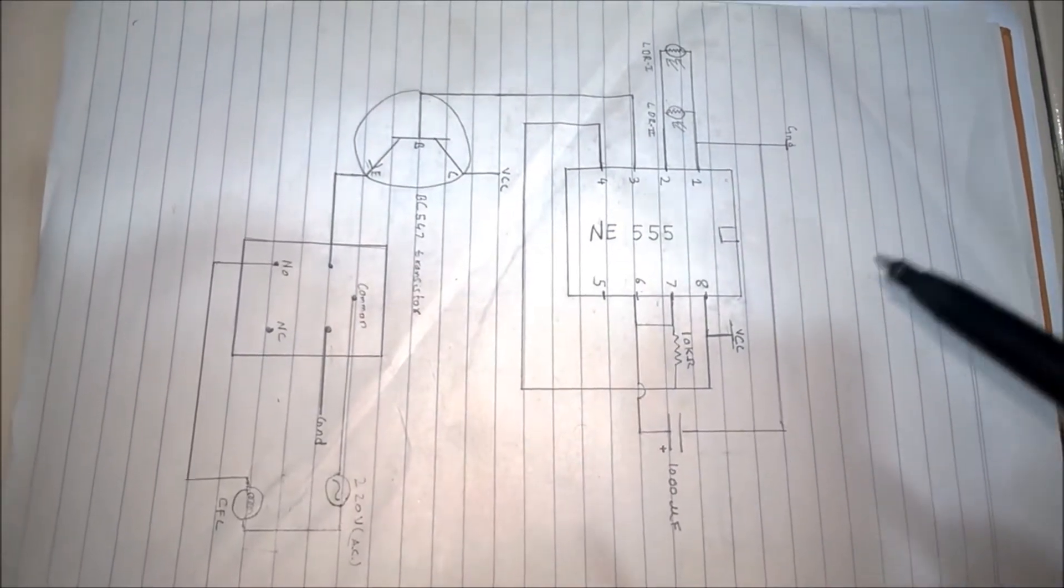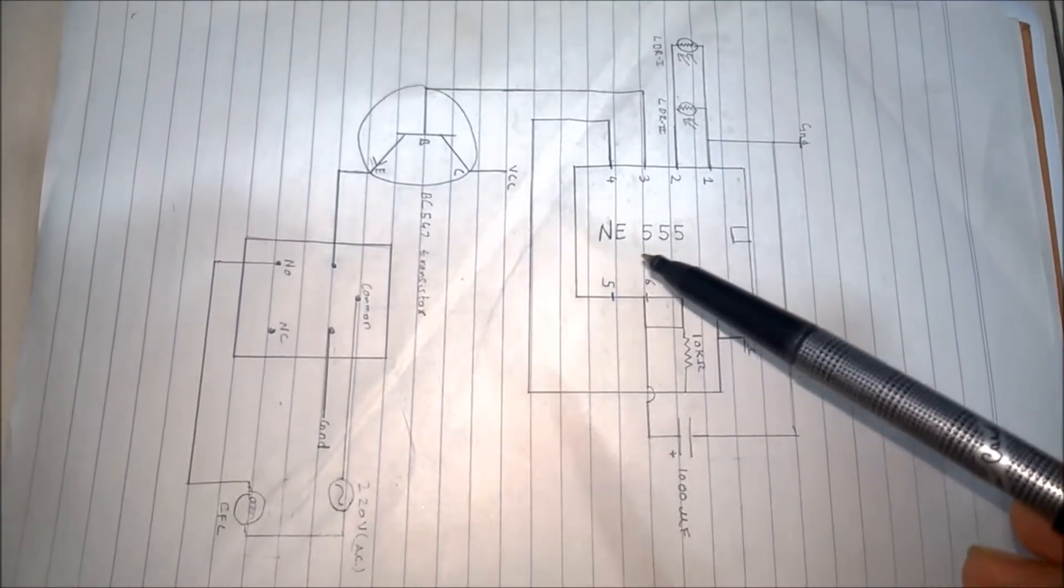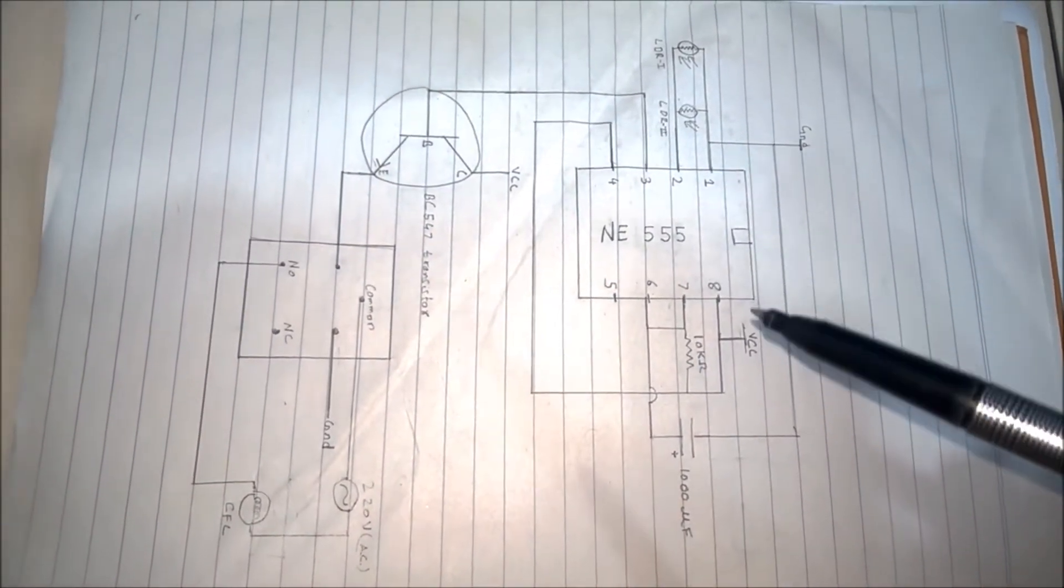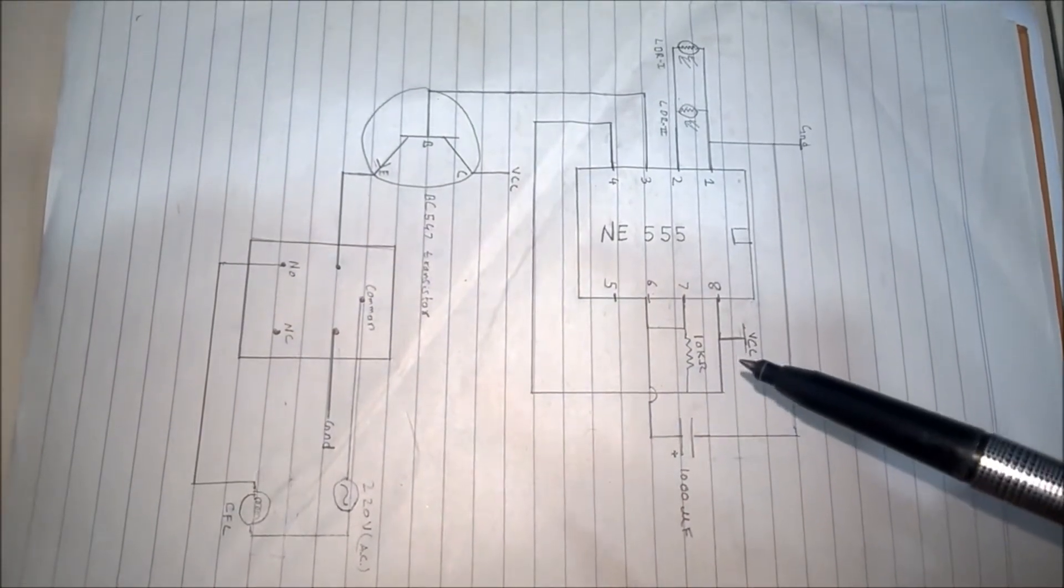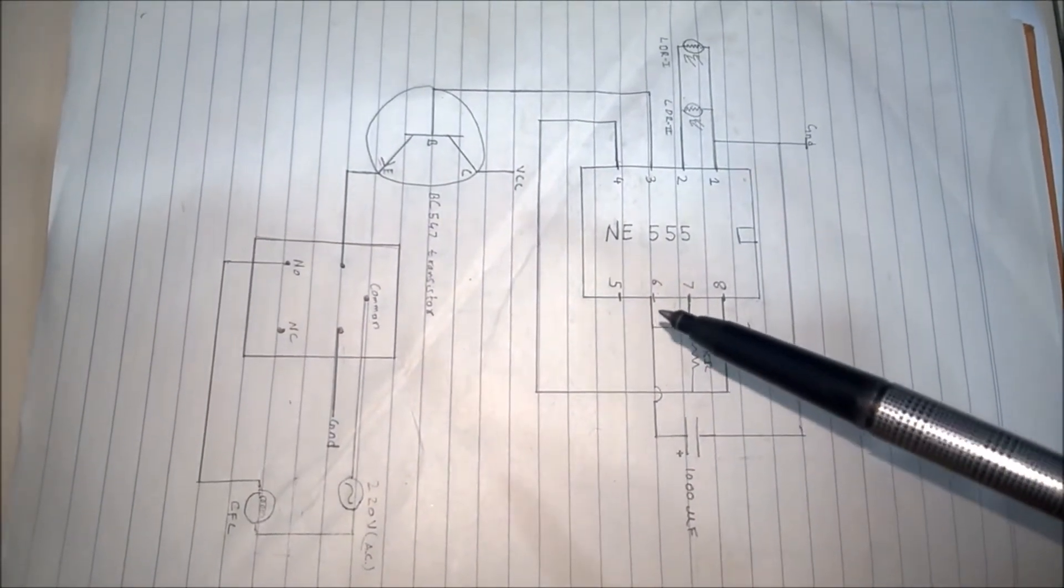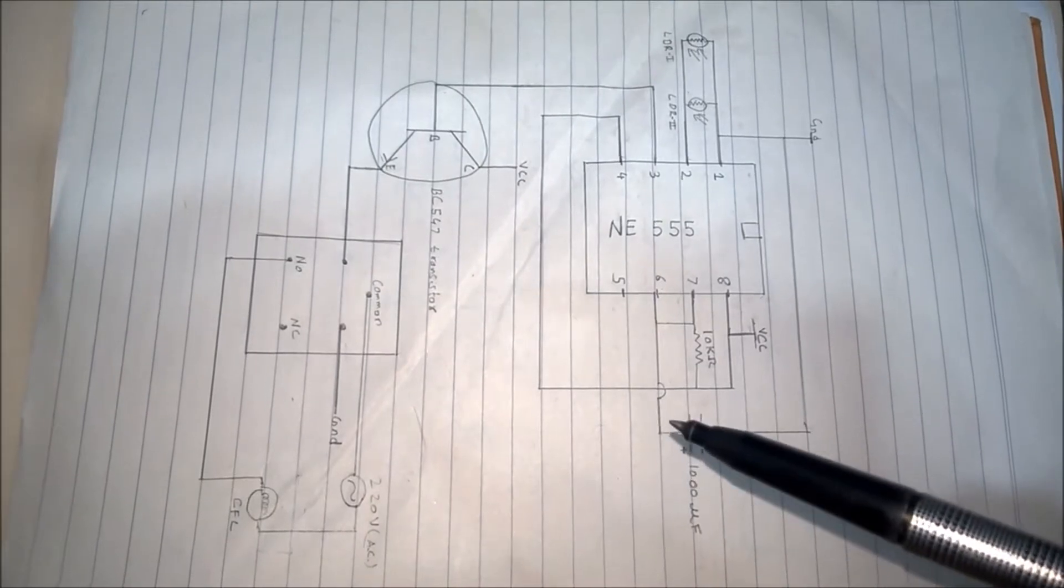First, I'll explain my project via this circuit diagram. As you can see, I have used 555 IC in mono-stable mode. I used a 10K resistor across pins 6 and 8, and a 1000 microfarad capacitor across pins 6 and 1.